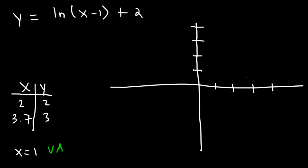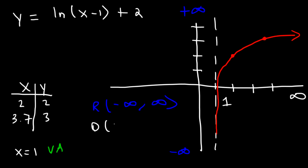So let's start with the vertical asymptote at x equals 1. Next, we have the point 2, 2. And then 3.7, 3, which is close to 4. The graph is going to start from the vertical asymptote and it's going to follow the two points. The lowest y value is negative infinity. The highest is infinity. So the range, therefore, is all real numbers, negative infinity to infinity. Now for the domain, the lowest x value is 1. The highest is infinity. So the domain is 1 to infinity.